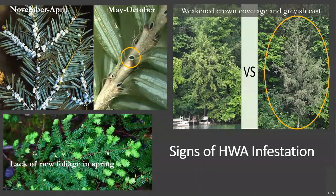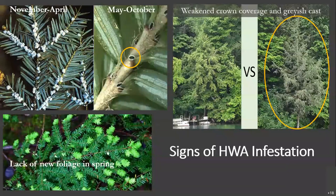HWA can be spotted year-round but the signs to look for vary by season. From November to April, look for white woolly masses on twigs at the base of the needles — look underneath the branches from the ground. It will look like tiny cotton swabs, as seen in the top left photo. From May to October, look for a small black nymph about the size of a sesame seed surrounded by white hairs — it looks like a little halo, circled in yellow in the middle photo. Infested trees show symptoms such as loss of crown coverage and a grayish cast, and lack the bright green new growth at the end of branches in spring.